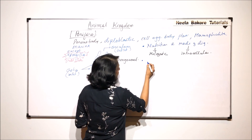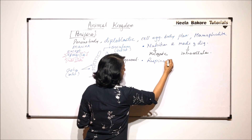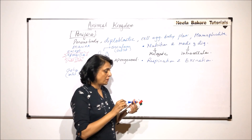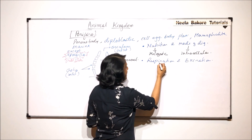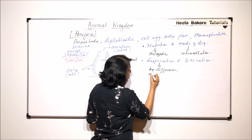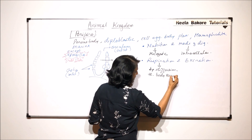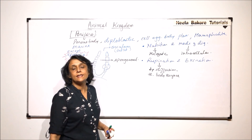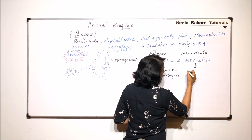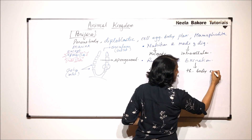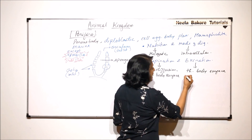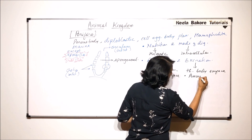The next is respiration and excretion. Respiration means gaseous exchange, and gaseous exchange takes place by diffusion through the body surface. So the body surface acts as the area through which gaseous exchange takes place. Excretion is also through the body surface, and the nitrogenous waste which sponges eliminate is ammonia — so they are ammonotelic.